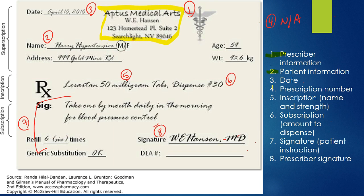For number two, the patient information, you'll see it's right here next to the hospital information. It will have the patient's name, their address, maybe their gender, their age, and then maybe their weight as well.